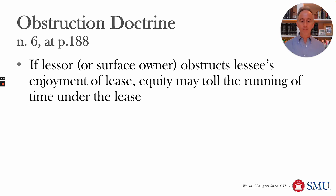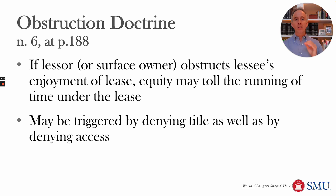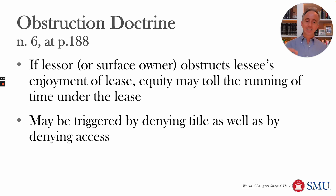The obstruction doctrine can also be triggered if the surface owner denies that the oil and gas company has title. If the oil and gas company is afraid it might lose title because it's being contested by the surface owner, it may not want to drill until that's cleared up. The surface owner's denial of title can toll the running of the primary term, which would otherwise eventually cut off the oil and gas company's option to drill.